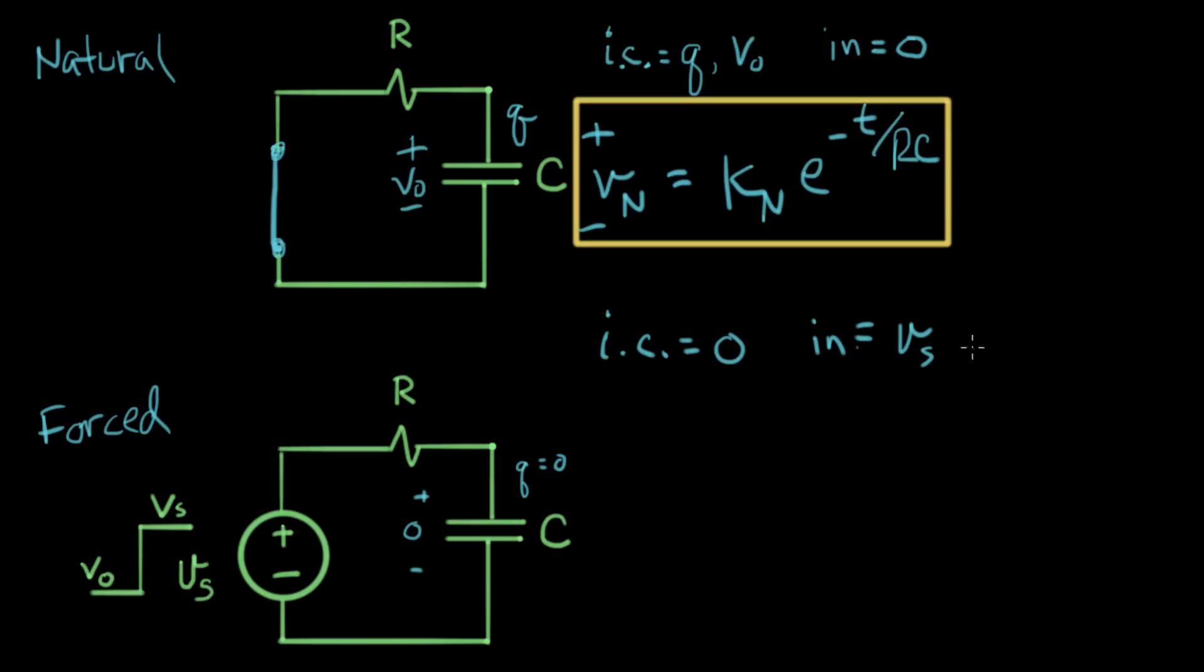And in particular, the input is equal to VS. We're going to solve the forced response after time equals zero. So, that means that the input is VS, capital VS. And as a reminder, what we're trying to solve here is the differential equation from the previous screen.